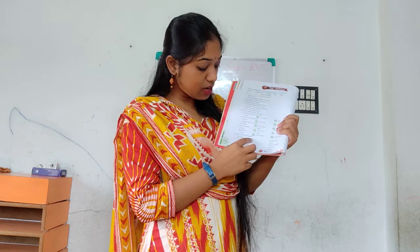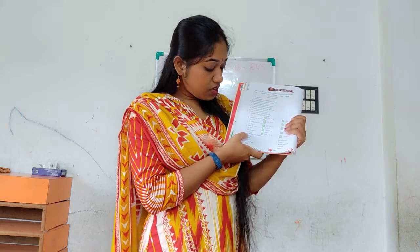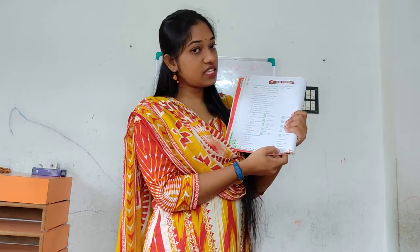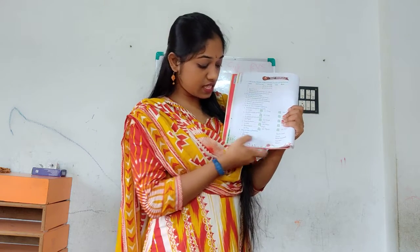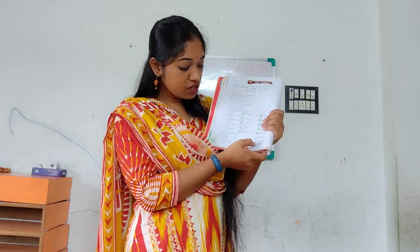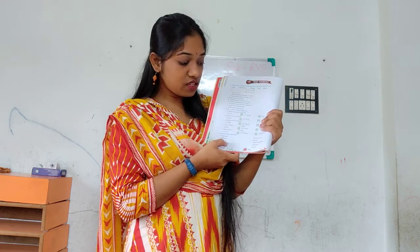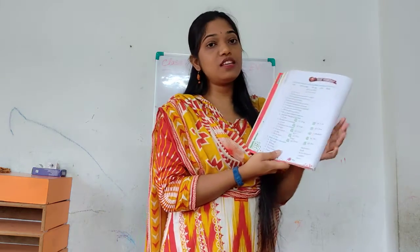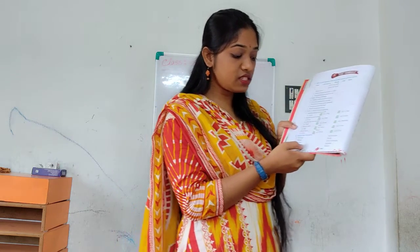Number 4: Match the columns. There are 2 columns. First: 6 legs - insects have 6 legs, so A matches with insects. Whale - whale is aquatic, so whale matches with aquatic. Forest - wild animals live in the forest, so forest matches with wild animals. 2 wings - do it yourself.